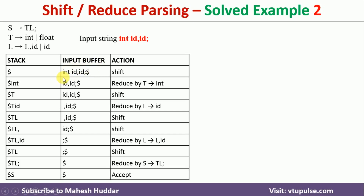We have to perform either shift or reduce based on the content of the stack. Initially, we don't have anything on the stack, so the first token 'int' will be shifted into the stack — that is why I have written 'shift' as the action. Once we shift 'int' on the stack top, the input buffer has 'id comma id semicolon $' remaining. Now, looking at the stack content 'int', we can apply the rule T → int, so int is reduced to T. The input buffer remains the same.